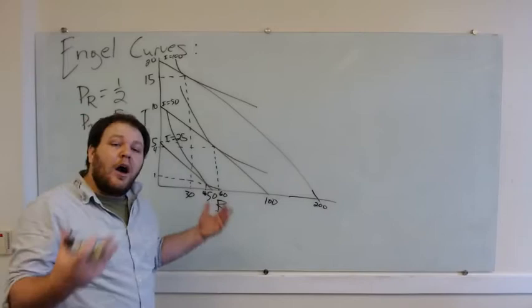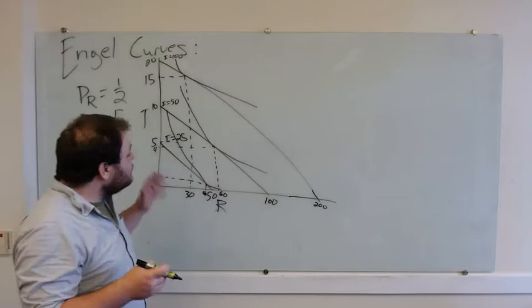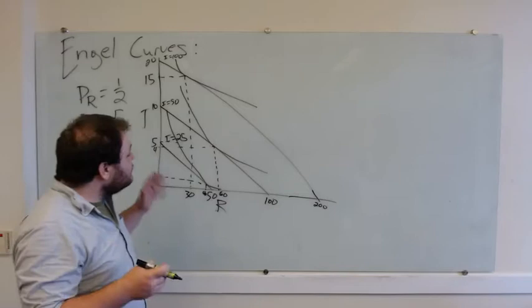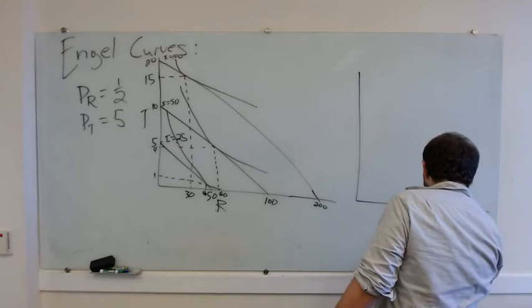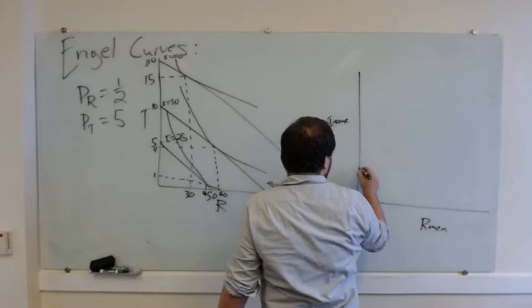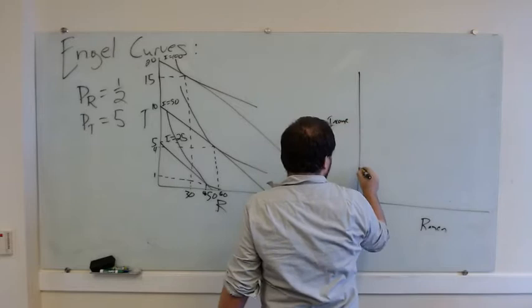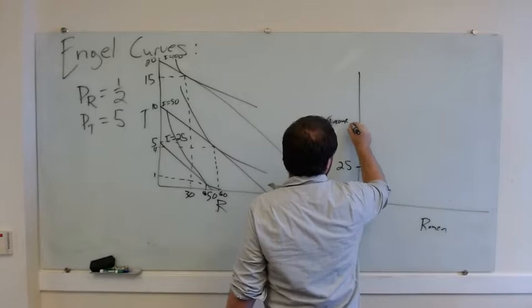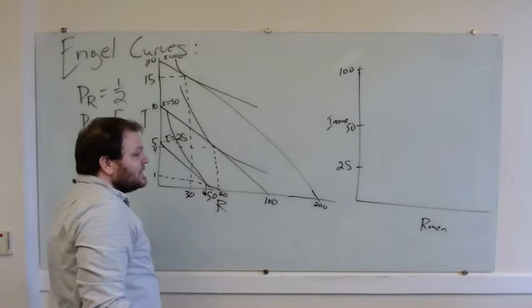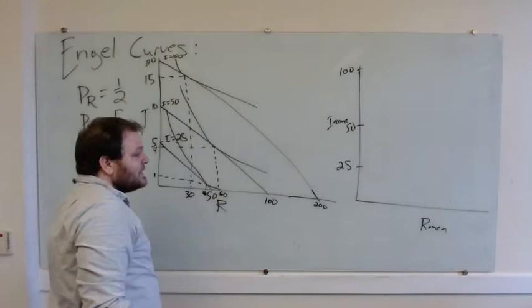We can imagine a set of preferences that would lead to these optimal choices under different incomes. So the way we would turn this, which we'll call an income expansion path, into an Engel curve is by taking the information from each of these budget constraints and plotting them on a graph. So if we wanted to make a graph of ramen that you purchase as a function of income, we would say, okay, well, we saw you with an income of 25 bucks, with an income of 50 bucks, and with an income of 100 bucks. We saw that when you had 25 bucks, you bought 40 packets of ramen.